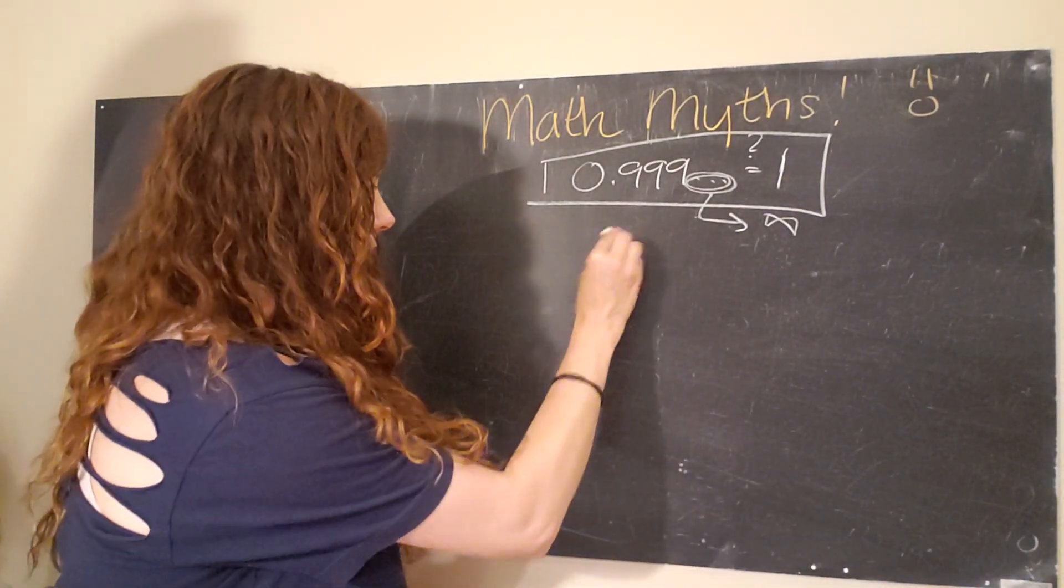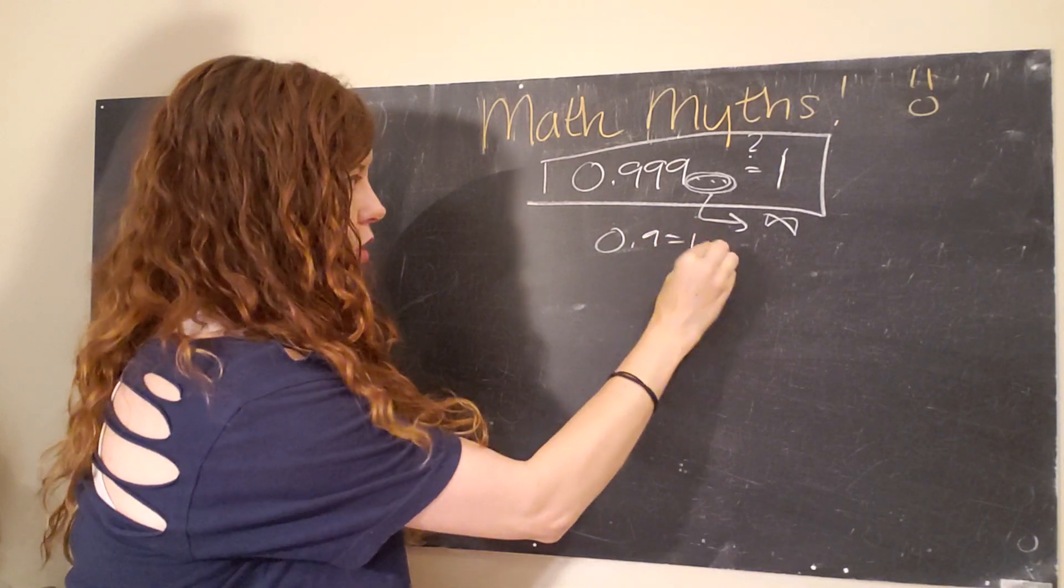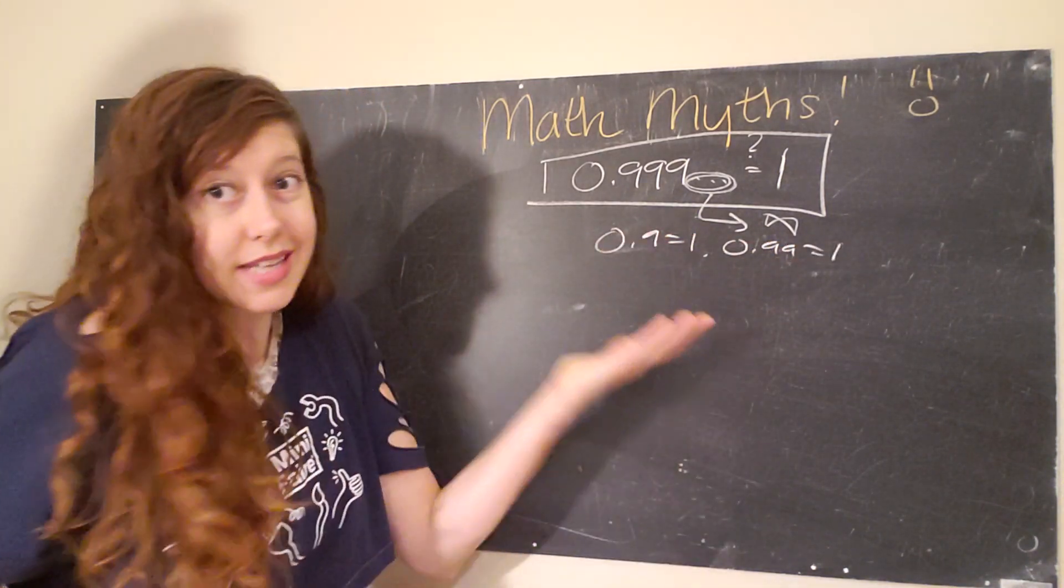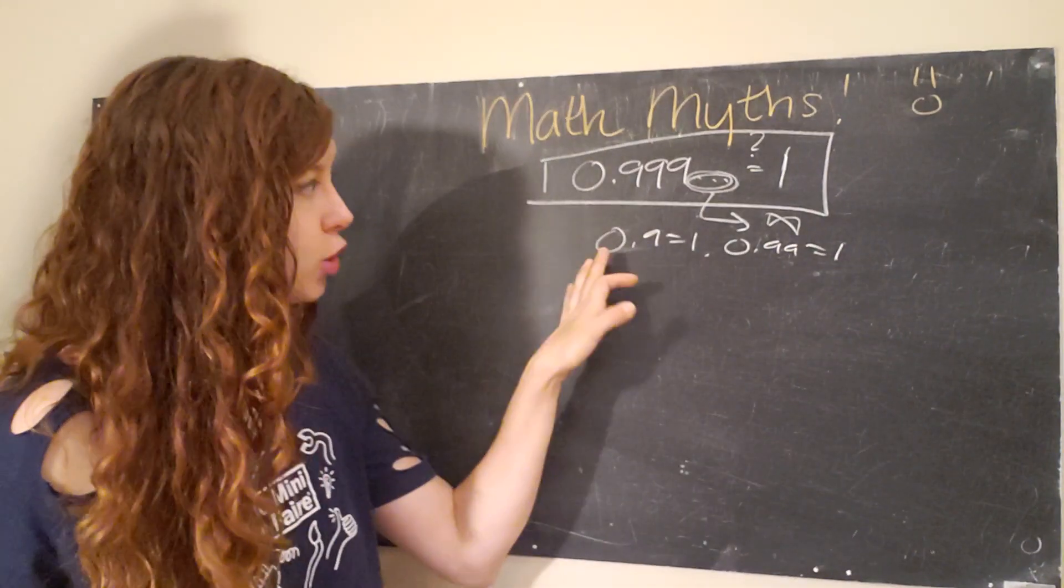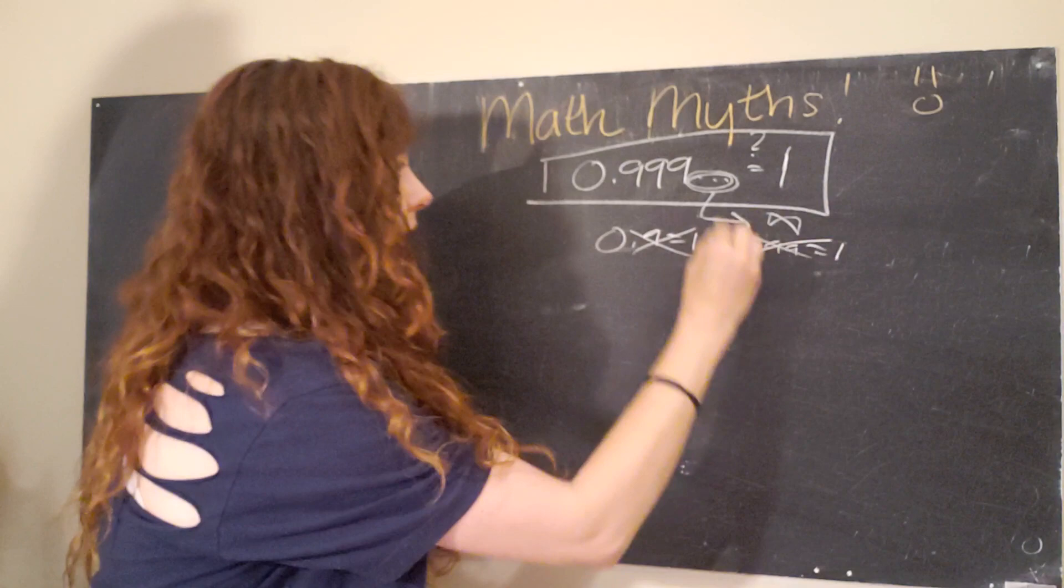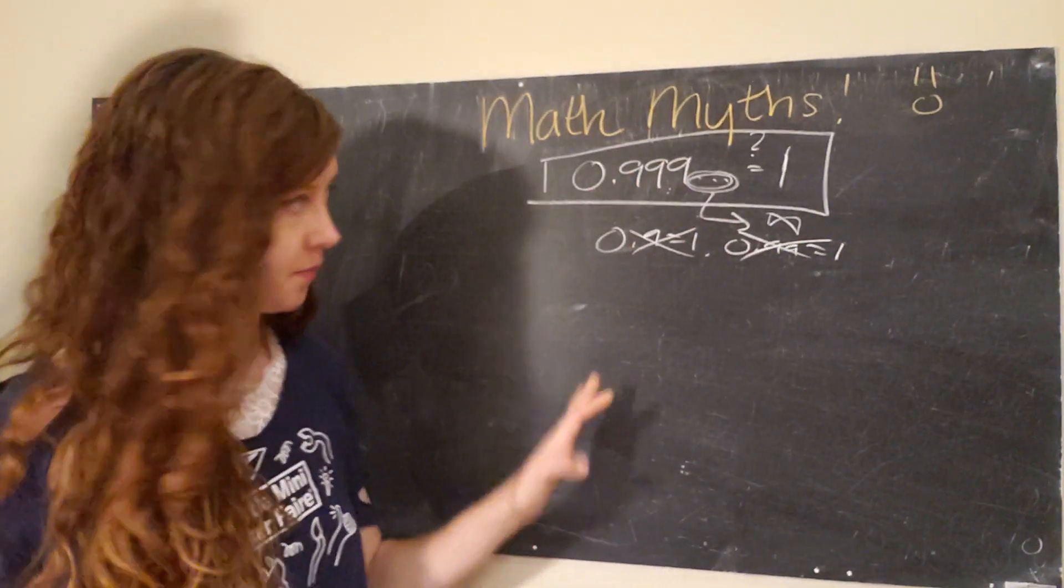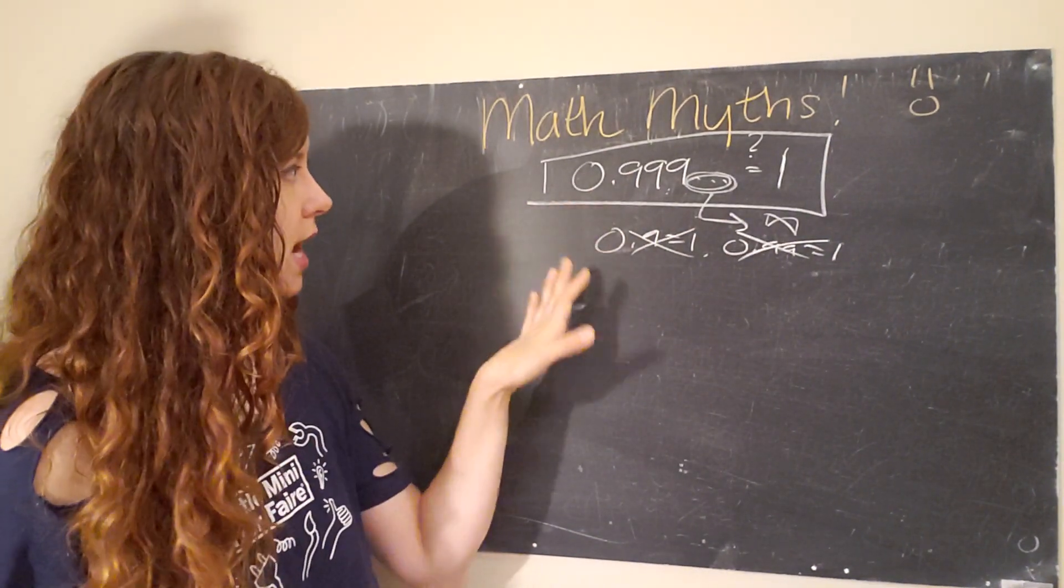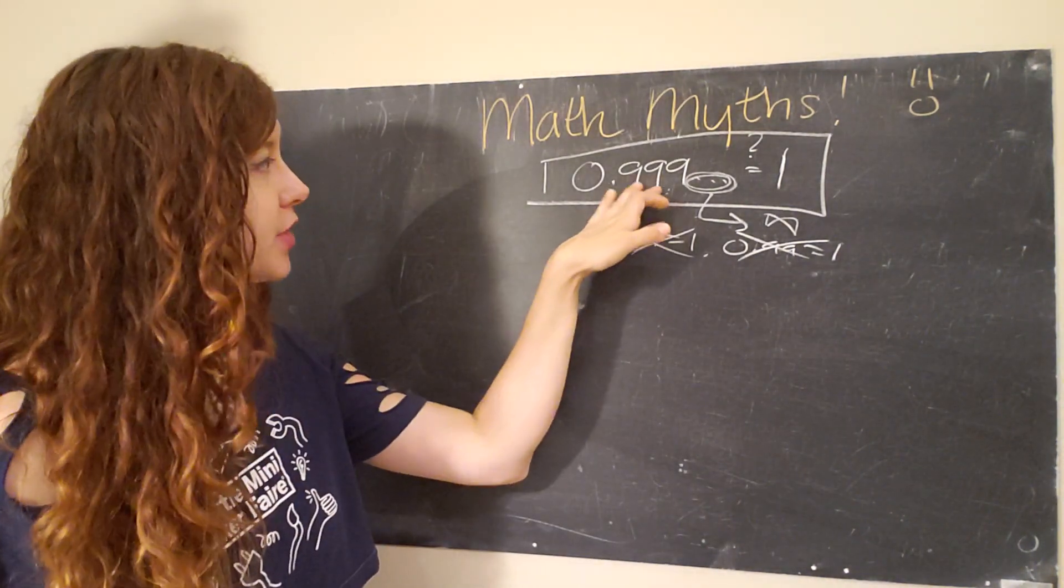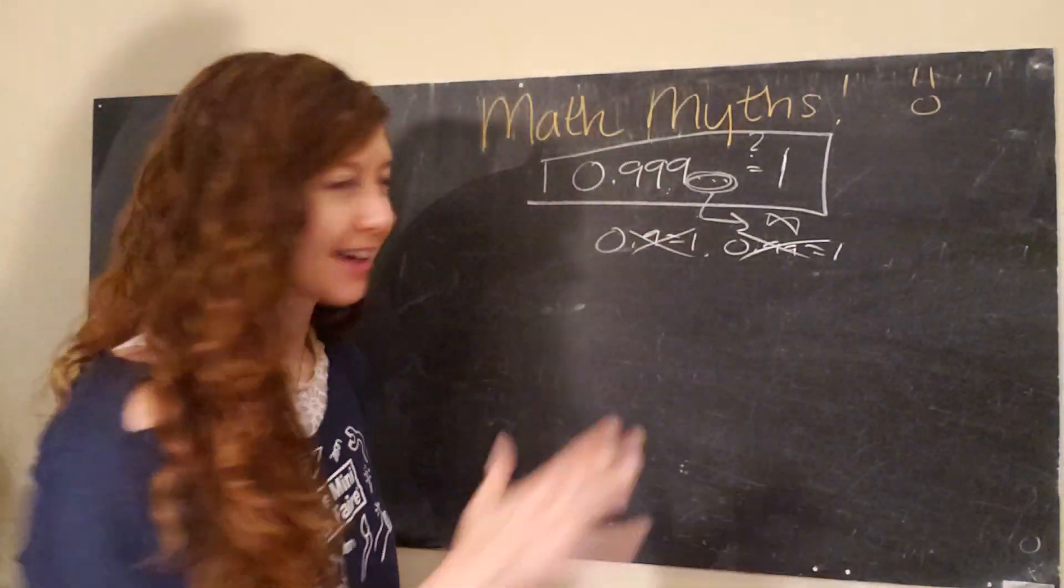And so what we're not saying is that 0.9 equals one or that 0.99 equals one. You could say this if you were to clarify that you're rounding, and that's fair, but this is different than this. And so what we'll show is that we're going to use a geometric series to show that this sum is in fact true.